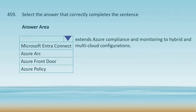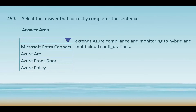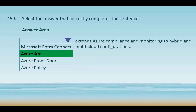Question number 459. You need to select the answer that correctly completes the sentence. Your options are Microsoft IntraConnect, Azure Arc, Azure Front Door, and Azure Policy. Which of them extends Azure compliance and monitoring to hybrid and multi-cloud configurations? The correct answer is Azure Arc, which extends Azure compliance, governance, and management capabilities to hybrid and multi-cloud environments. It enables organizations to manage resources such as virtual machines, Kubernetes clusters, and databases across on-premise, multi-cloud, and the edge using a single control plane in Azure.